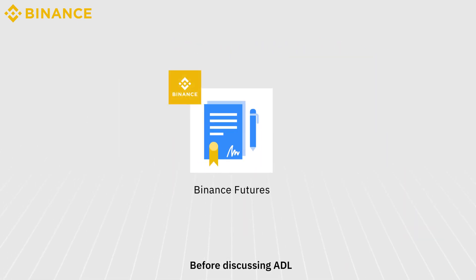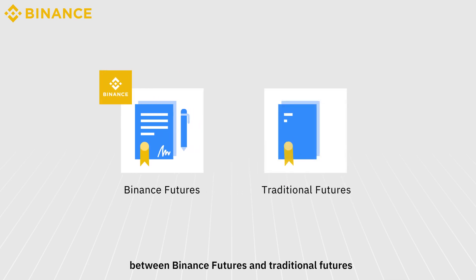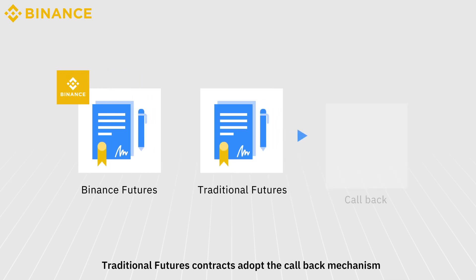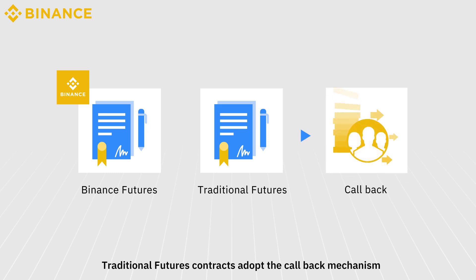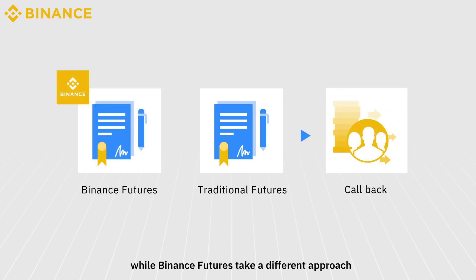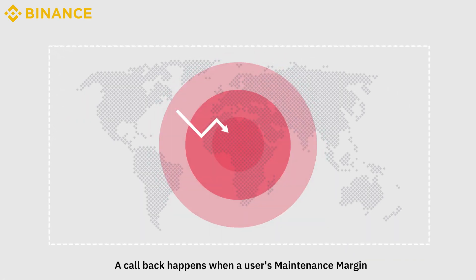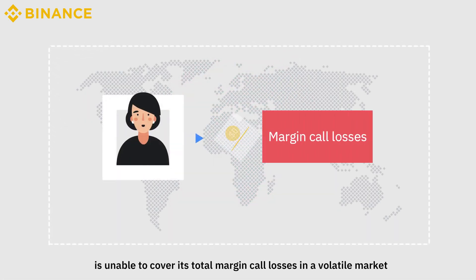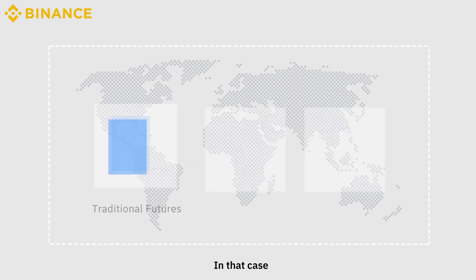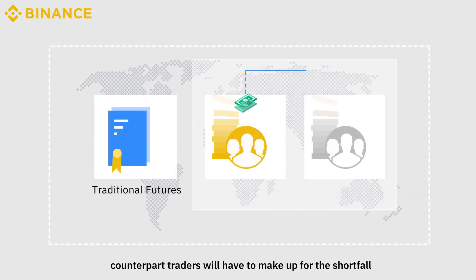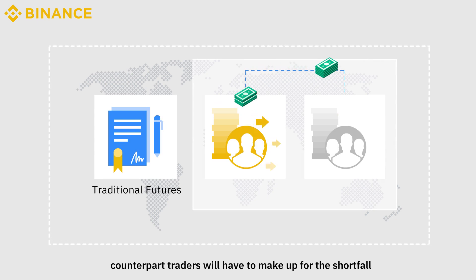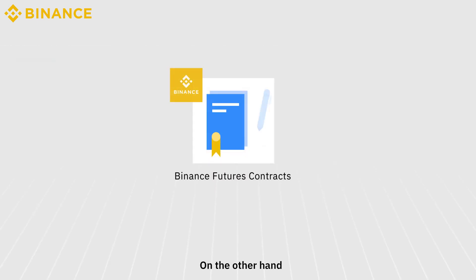Before discussing ADL, let's first understand the differences between Binance Futures and Traditional Futures. Traditional Futures contracts adopt the callback mechanism, while Binance Futures takes a different approach. A callback happens when a user's maintenance margin is unable to cover its total margin call losses in a volatile market. In that case, counterpart traders will have to make up the shortfall.